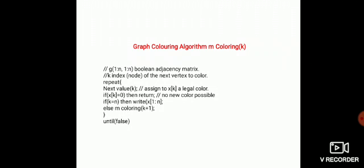First, give a legal color assigned to x of k. Here, the next value of k is used to check a bounding function to assign a legal color to x of k. If x of k equals 0, then no color is feasible. And if k equals n, then n vertices are colored using at most m colors.